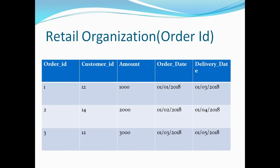Let's understand this with a real practical example of a retail organization. As the warehouse manager, I have an order table which captures the details of all orders placed in my organization. We have three orders — order 1, 2, and 3 — placed by customer IDs 12, 14, and 12 again. The order amounts are 1,000, 2,000, and 3,000 rupees respectively, along with an order date and delivery date. For example, order 1 placed by customer 12 was placed on 1st January 2018 with a delivery date of 3rd January.